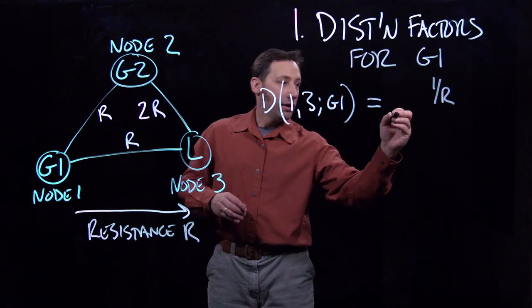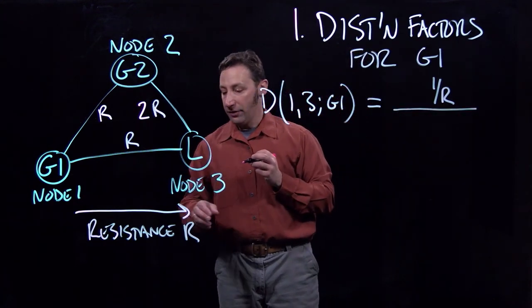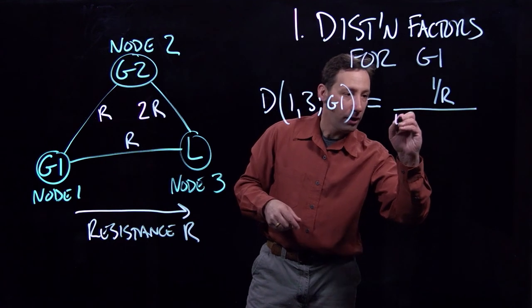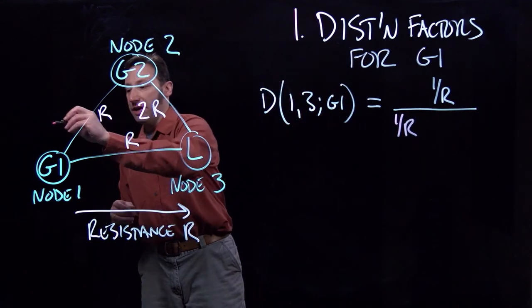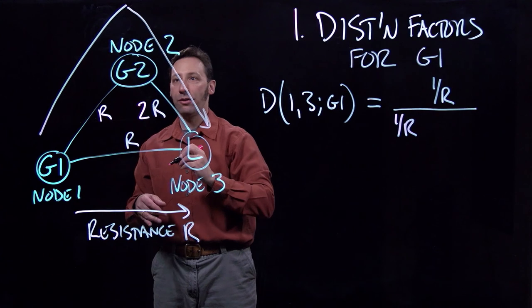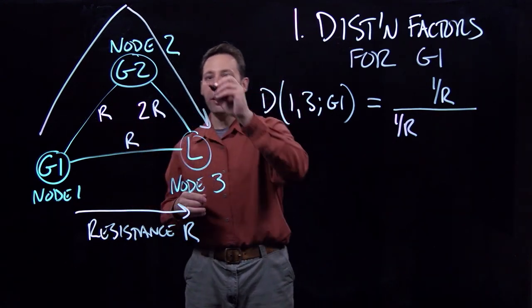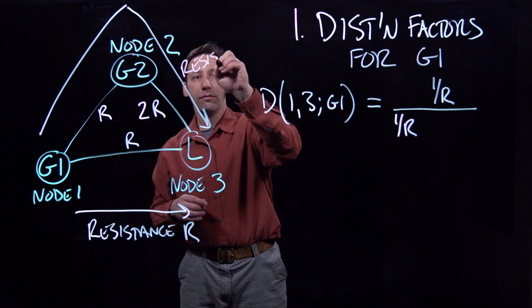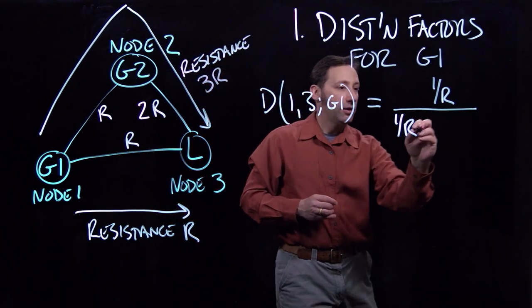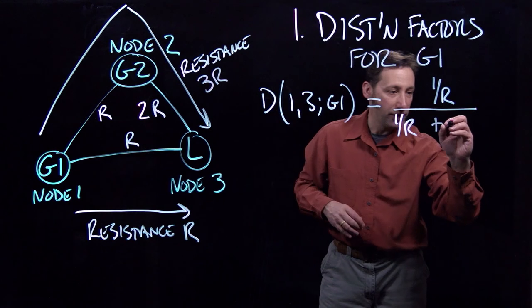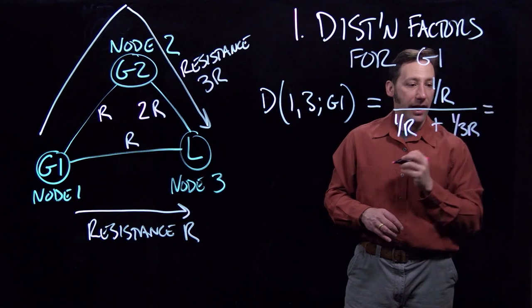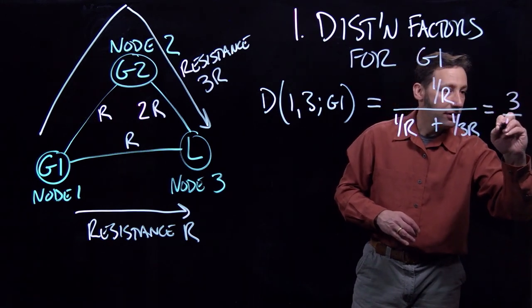In the denominator, we're going to have the sum of the inverse resistances for both paths. The resistance of the direct path from 1 to 3 is 1 over R. The indirect path going from node 1 to node 2 down to node 3 has total resistance 3R. So the second term in the denominator is 1 over 3R. And we're going to get 3 quarters.